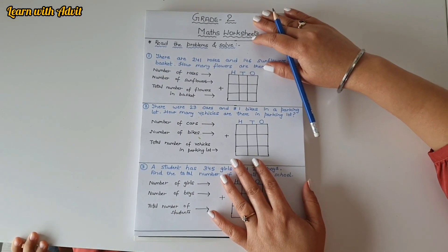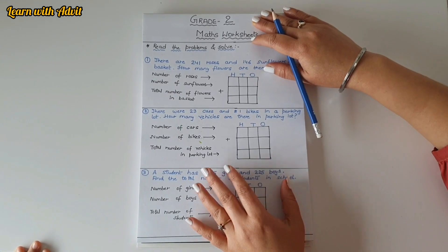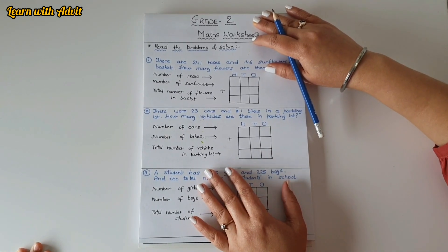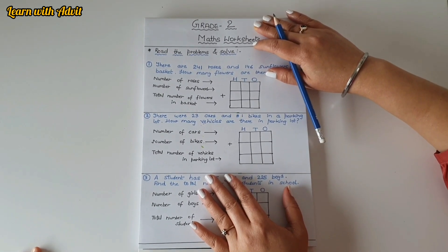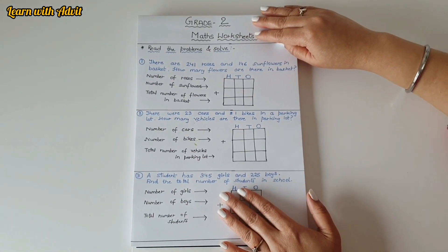Hi everyone, welcome back to our channel. How are you all? I hope you all are doing great. Today's video is for grade 2 kids and it's a maths worksheet, so let's get started. This is the word problem you have to solve in a place value chart.